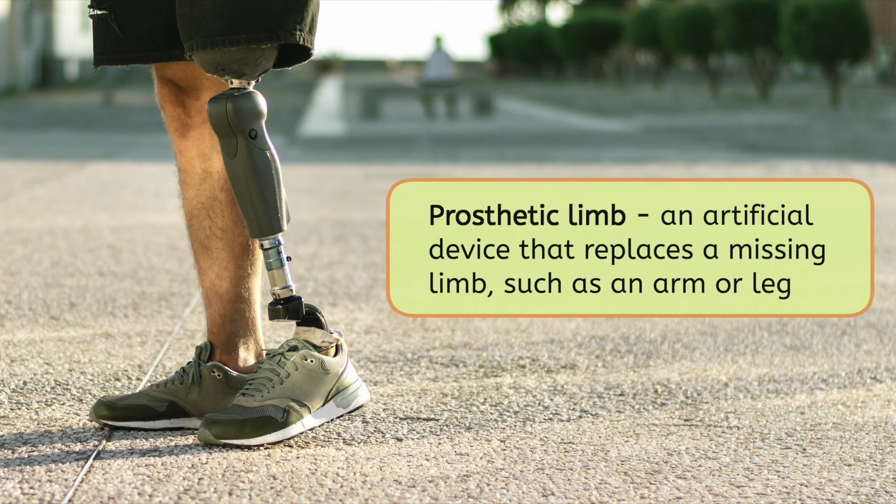However, prosthetic limbs can enhance accessibility. A prosthetic limb is an artificial device that replaces a missing limb. Prosthetics are designed to mimic the movement and function of natural limbs, making daily life more accessible to more people.